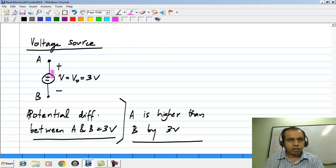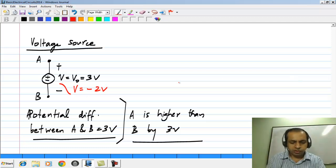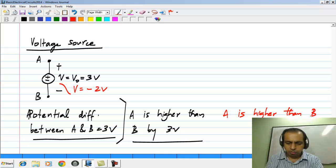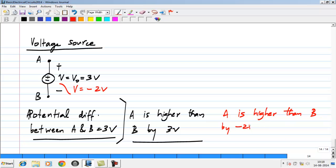I want to emphasize that the polarity shown here is for the definition of the voltage. The voltage itself could be positive or negative. Let me take another case where V defined this way is minus 2 volts. What it means is that A is higher than B by minus 2 volts, which is equivalent to saying A is lower than B by 2 volts.